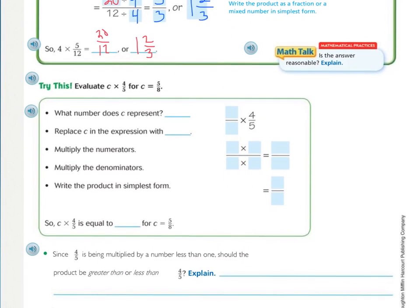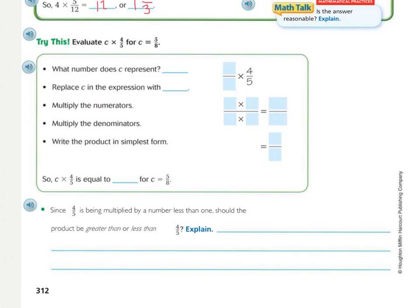Looking at the try this, this is an introduction to an algebraic situation, which all that means is that we're going to be using a variable. We're going to use a letter to represent a number. And then they're going to give us a number and we're just going to plug it in. Evaluate c times four-fifths for c equaling five-eighths. According to this sentence, what number does c represent? Or, in our case, what fraction does c represent? c represents five-eighths. That's where c equals five-eighths.